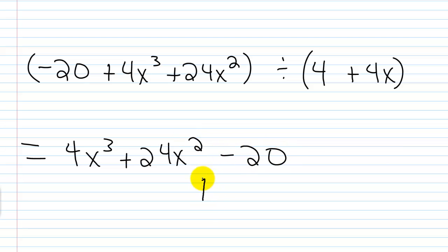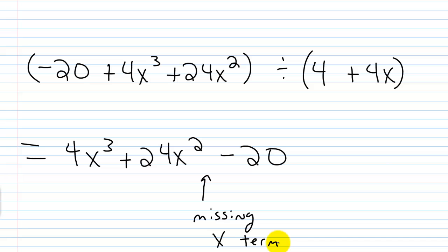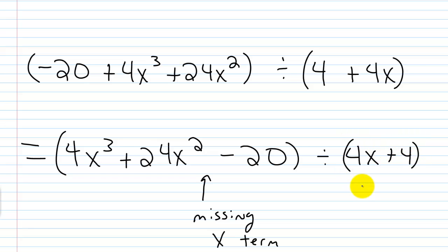If you look here, I'm missing an x term. I'll show you the solution for that in a minute — we're going to put a 0 for the coefficient for that. Then we're dividing by 4 plus 4x. I just switched the order to 4x plus 4 so that it's in standard form.